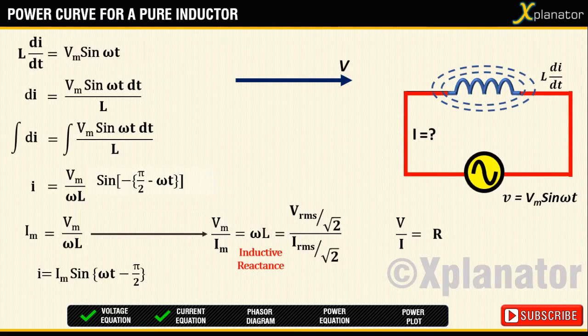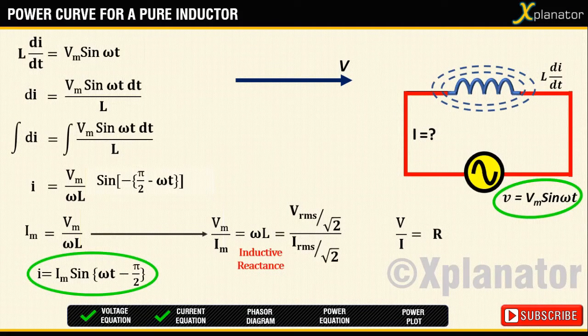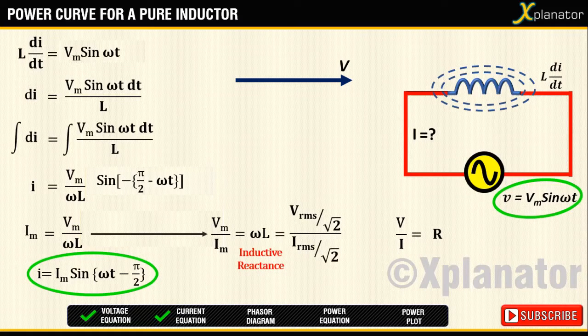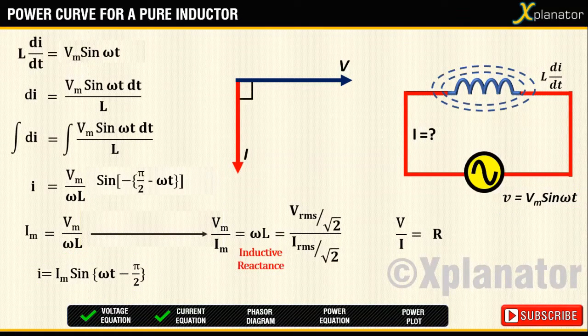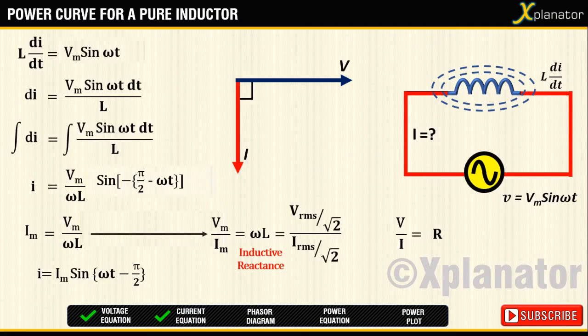From the equation, it is seen that current lags the voltage by 90 degrees. So we draw the current phasor at an angle of 90 degrees in the negative y direction. This is a simple phasor diagram for a pure inductor.